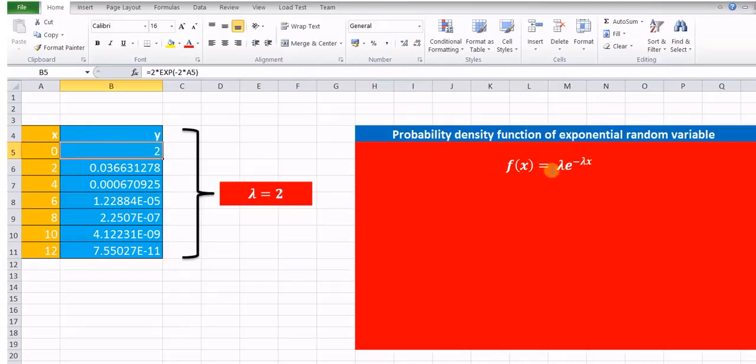And y is nothing but the function lambda e raised to minus lambda x. Now, let us consider this particular value. Lambda, let us assume the value of lambda as 2. So, lambda is 2 e raised to minus 2 into x.